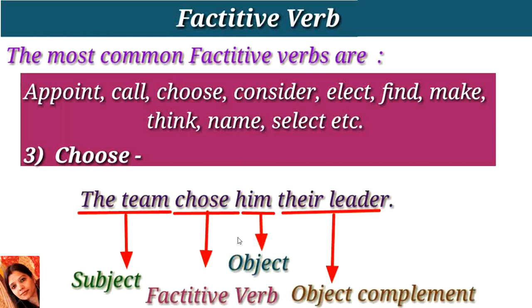The next verb is choose. Example: 'The team chose him their leader.' Here, 'the team' is a noun and the subject. 'Chose' is the past form of choose and is the verb. 'Him,' a pronoun, is the object. 'Their leader' is the objective complement — it is used to describe the object.